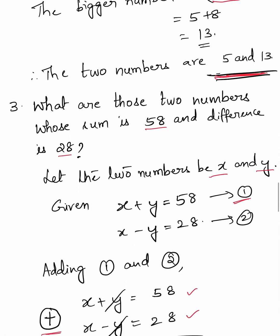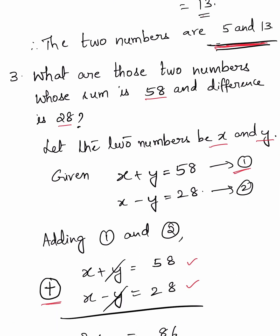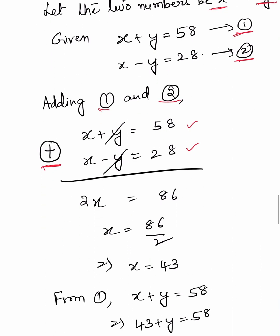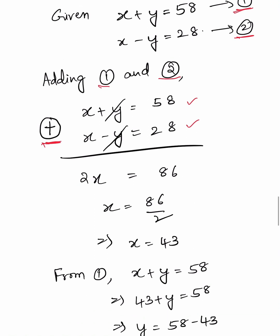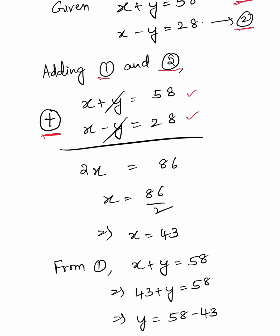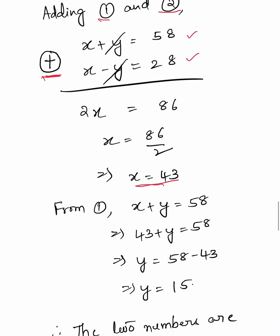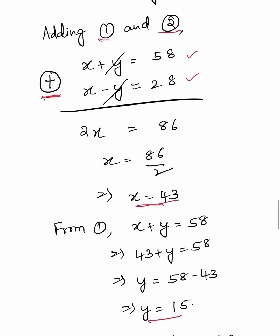Find two numbers whose sum is 58 and difference is 28. Let the two numbers be X and Y. Given X plus Y equals 58 and X minus Y equals 28. Adding both equations: 2X equals 86, so X equals 43. Substituting into the first equation: 43 plus Y equals 58, so Y equals 15. Therefore the two numbers are 43 and 15.